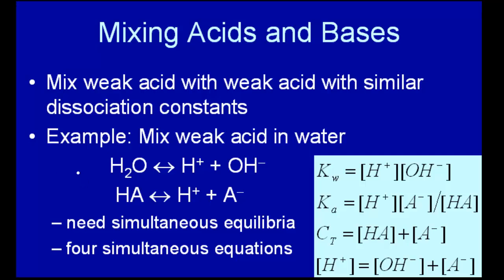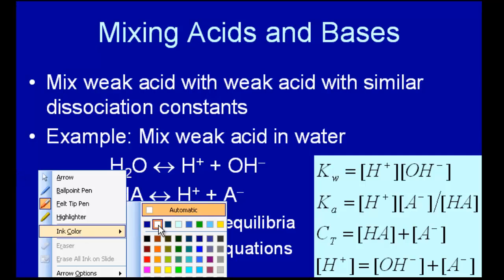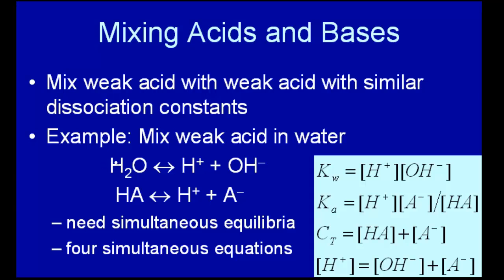For example, here is water. Water dissociates H+ and OH-. Suppose that you had a weak acid that acted like water in terms of its dissociation. This would dissociate into H+ and A-. These are two equilibria, but they share this common H+. So therefore the equilibria are coupled, and you need to consider simultaneous equilibria.